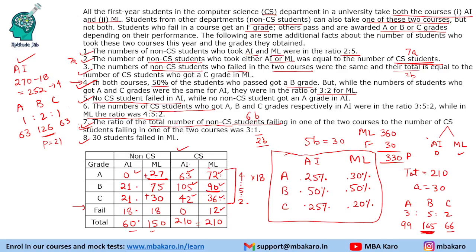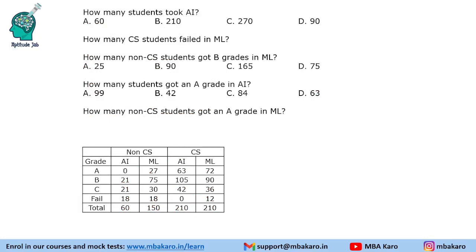Now let us look at the questions and their answers. How many students took AI? 60 non-CS students took AI, and for CS it is mandatory, so 270 students took AI. How many CS students failed in ML? 12 CS students failed. How many non-CS students got B grade in ML? That is 75. How many students got an A grade in AI? That is 0 non-CS and 63 CS, so 63 total. How many non-CS students got an A grade in ML? That is 27.